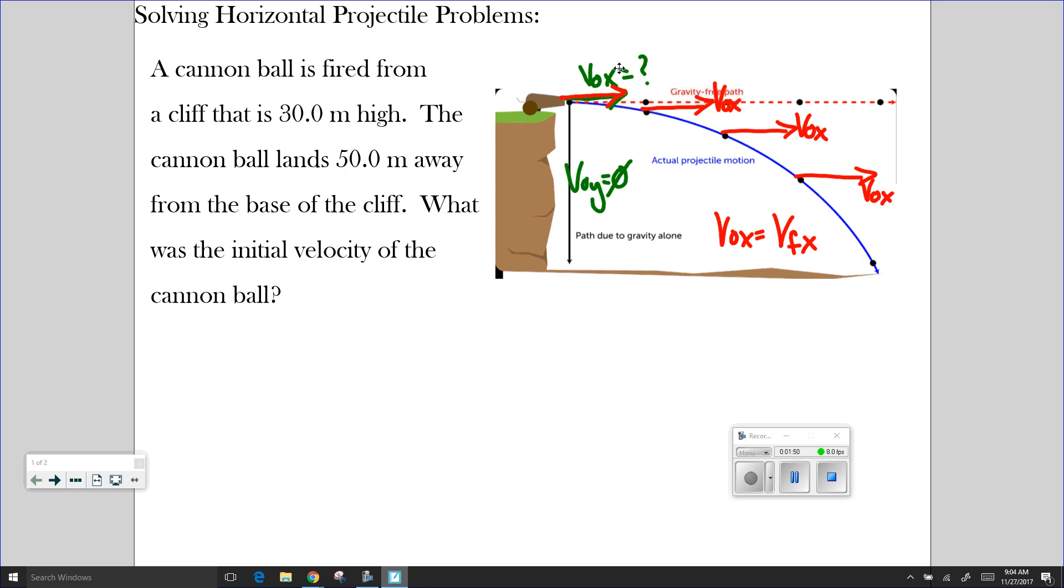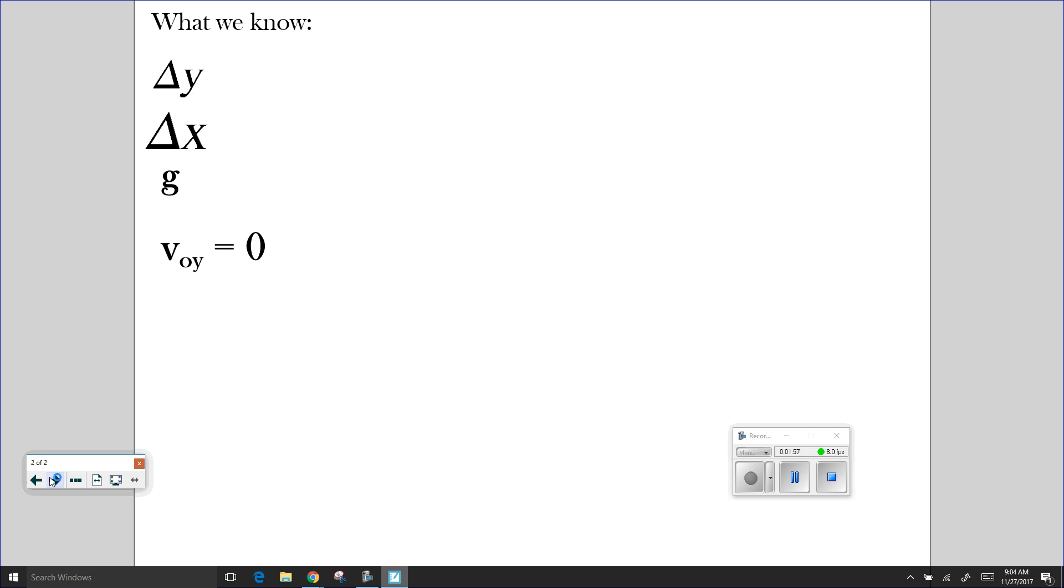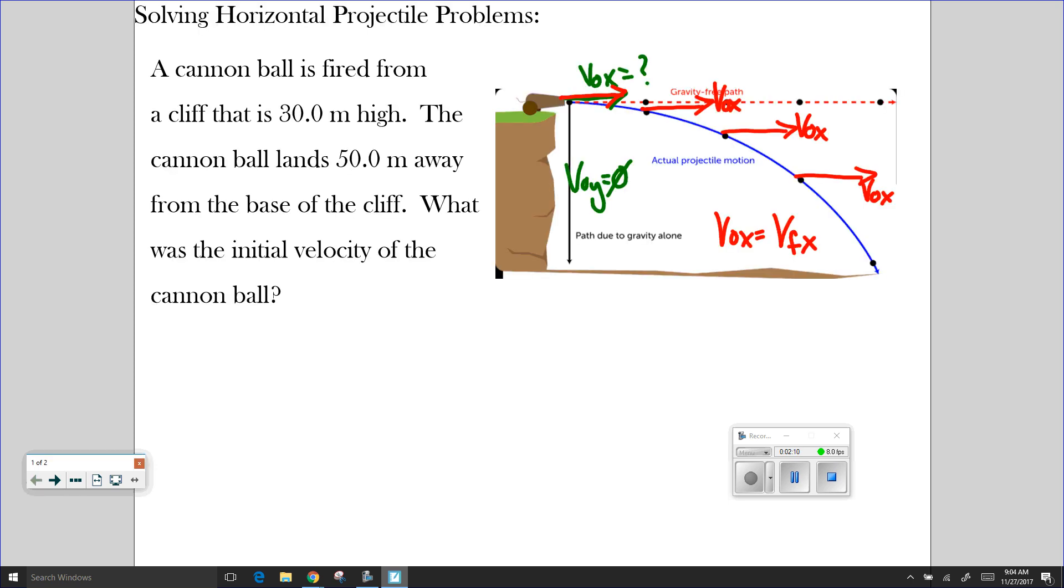So let's take a look at the variables that I know for this particular problem. What I do know is I do know the height of the cliff, and the height of the cliff is 30.0 meters. Going back and labeling that here. This distance here is the change in y. Notice that I'm using y now to signify displacement that is vertical, and that's going to be the 30.0 meters.